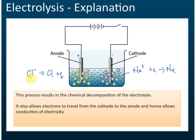The negative ions form a new substance, and the positive ions form another new substance. Sodium ion and sodium are very different — you need to know this. Chloride ion and chlorine are also very different; they are two different substances. So that is electrolysis.